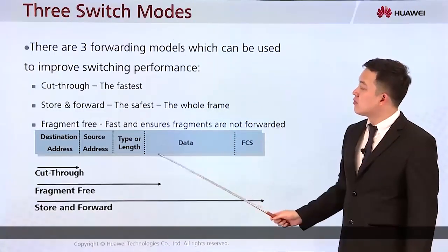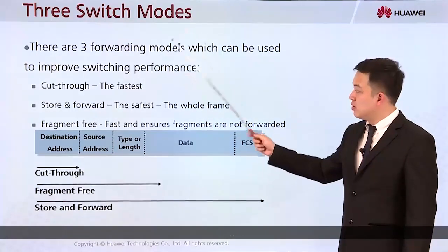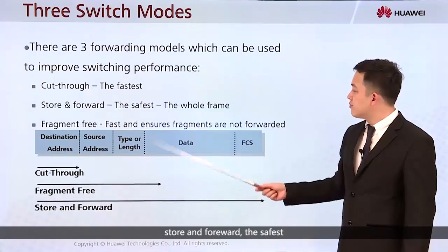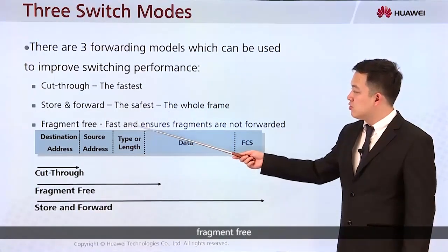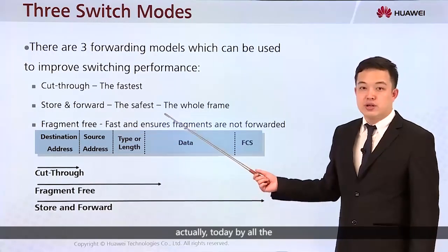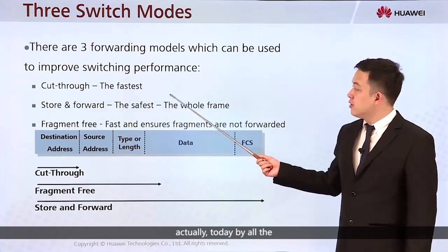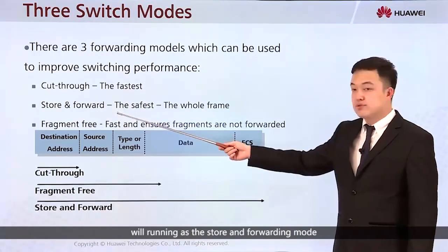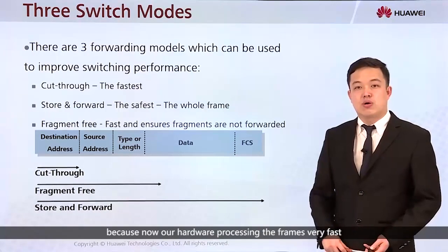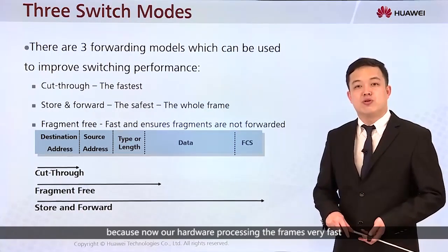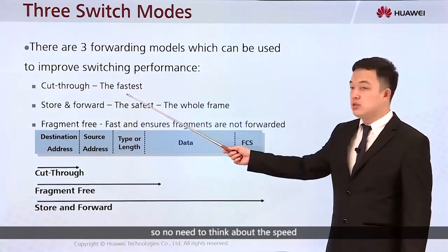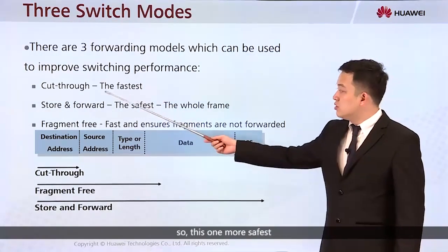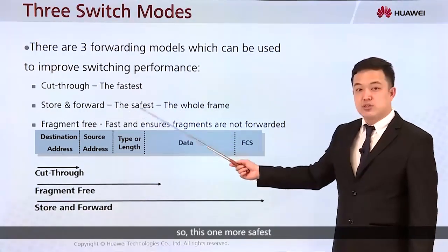There are three switch modes. Cut-through is the fastest, store-and-forward is the safest, and fragment-free is in between. Today most switches run in store-and-forward mode, because modern hardware processes frames very fast. There is no need to worry about speed since all interfaces run at line speed. Store-and-forward is the safest and better option.